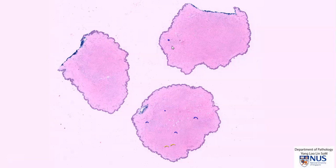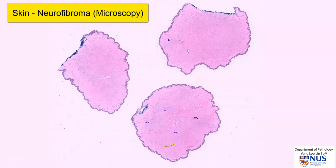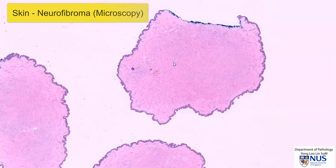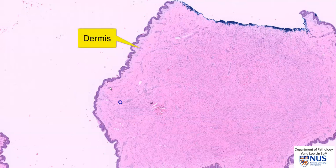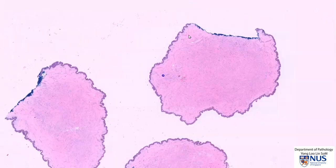This is a virtual microscopy slide of a neurofibroma, and this particular tumour has been cut into three slices. The overlying epidermis is uninvolved and normal. Just beneath the epidermis is the dermis. This central, ill-defined, slightly darker area is the area of the lesional tissue.